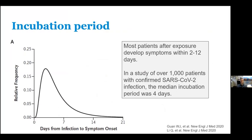After exposure, symptoms will typically develop within about a two to twelve day period. On average, looking at large-scale studies done in China, the median incubation period is about four days. If you come in contact with somebody with SARS-CoV-2 and you're going to get sick, it's usually around day four or five. Some people can take longer, which is why we talk about the 14-day quarantine period — if you've gone 14 days after an exposure with no symptoms, the odds that you'll develop symptoms at that point are virtually nil.